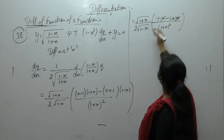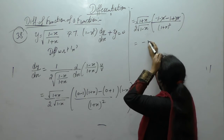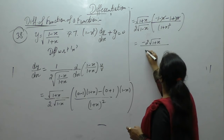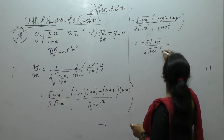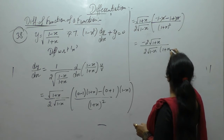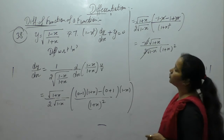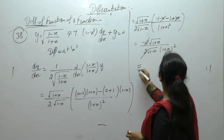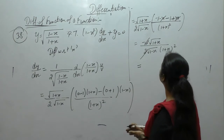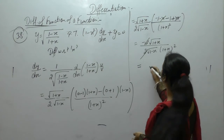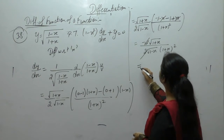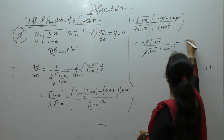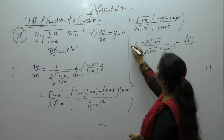The x terms cancel, giving minus 2 upon 2√(1 plus x) times 2√(1 minus x) times (1 plus x)². The 2 will get cancelled. Now we have the value of dy/dx.